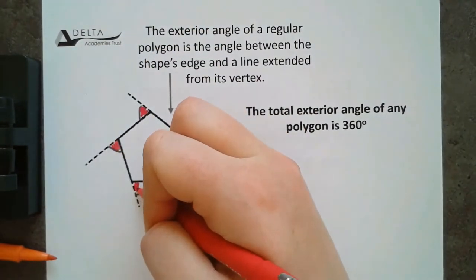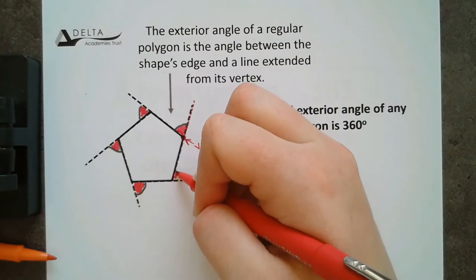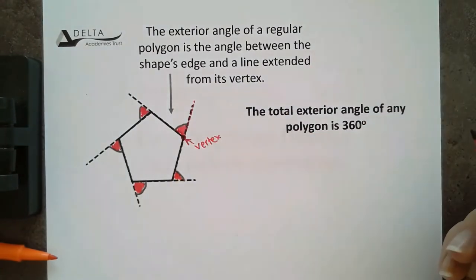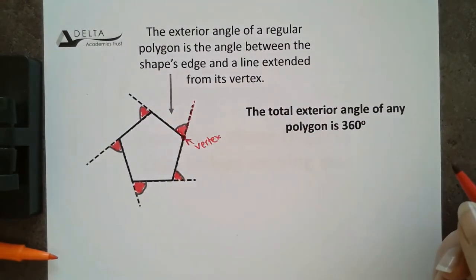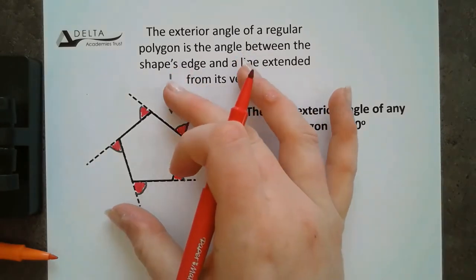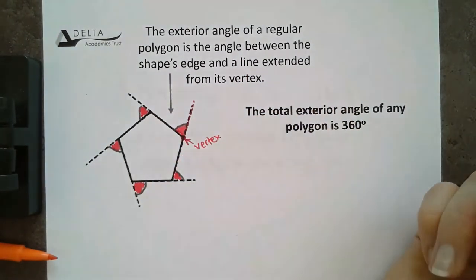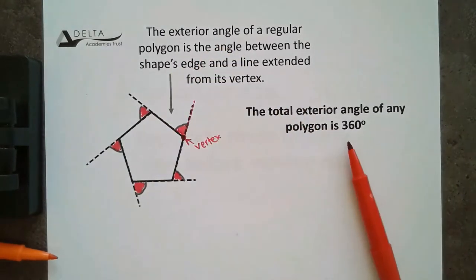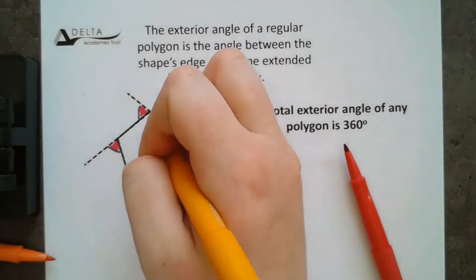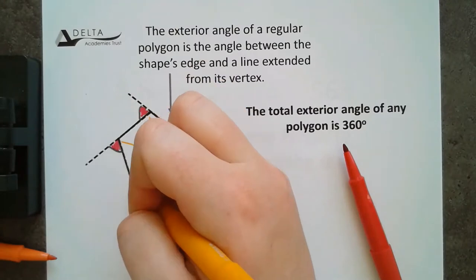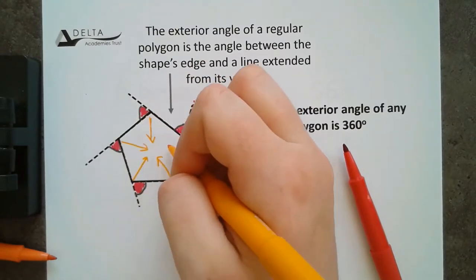So, here in our pentagon, I've got five different exterior angles. If we can imagine shrinking this shape down until it's as infinitely small as it can possibly be, this shape would shrink to essentially be a point. So, if we were to bring all these vertices in, it would shrink to be super, super tiny until it was essentially as small as a point.